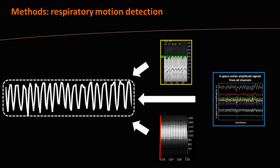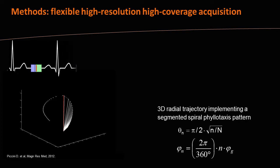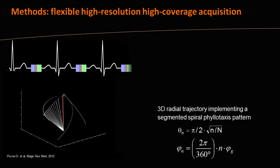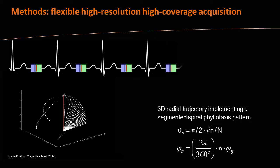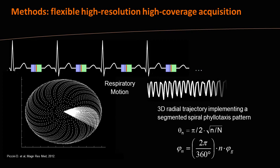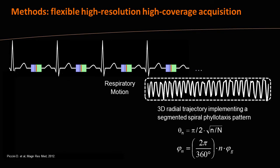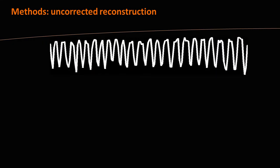The second ingredient of our work is a flexible acquisition. We can extract respiratory motion but do not know a priori how it matches our acquisition, so we need a trajectory that is uniform over time. Any subset of our data should be pseudo-uniform. This is ideally achieved by our 3D radial trajectory implementing the spiral phyllotaxis pattern, with a golden angle displacement over time, reaching full k-space coverage over the whole acquisition. We acquire our data triggered with this trajectory and have the respiratory signal extracted.